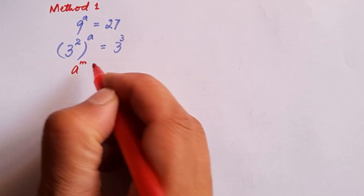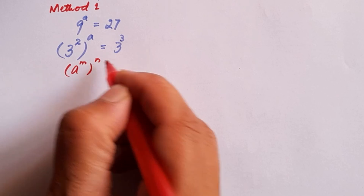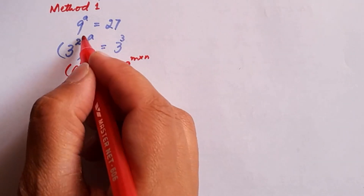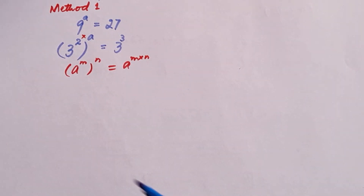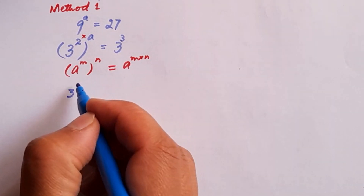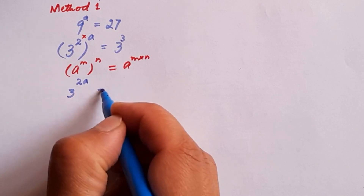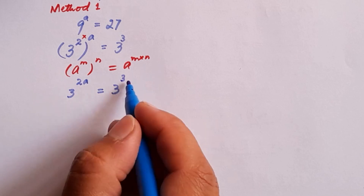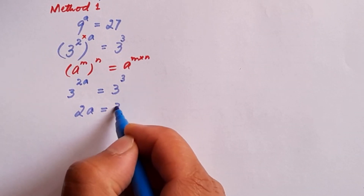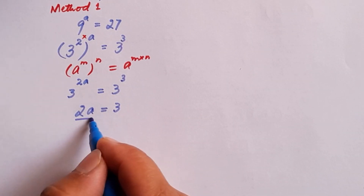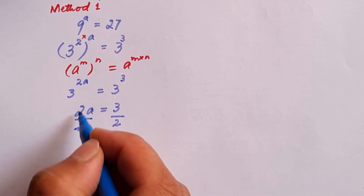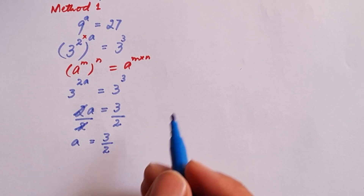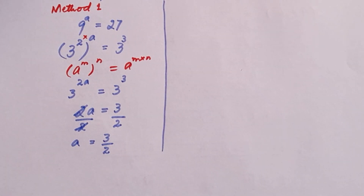Here we are going to use the power of a power rule: if a raised to power m, raised to power n, this equals a raised to power m times n. So we multiply the two powers to get 3 to the power 2a equal to 3 to the power 3. Since the bases are the same, we can equate the powers: 2a equals 3, so dividing by 2, a is equal to 3 by 2. This is the result from method 1.